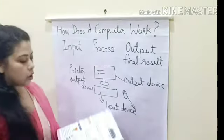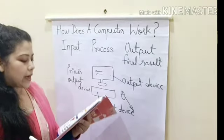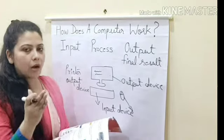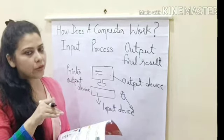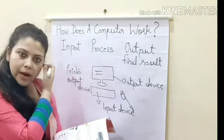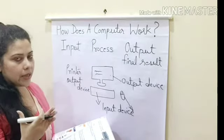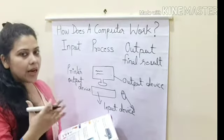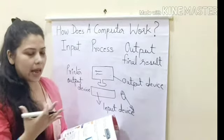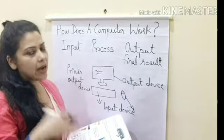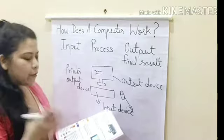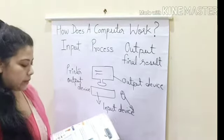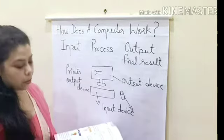Monitor and printer are the most common output devices. Keyboard and mouse are your input devices because we enter the data into the computer through keyboard and mouse. Then the work of the processor — that is the CPU — starts. It does all the thinking and calculation and gives the final result. The final result is the output, and the output devices are monitor and printer.